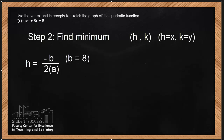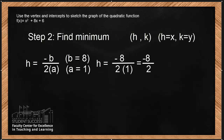Let's substitute: negative 8 divided by 2 times a. Remember we found a in step number 1 — it's a 1. Now we're going to simplify. Negative 8 divided by 2 times 1, which is 2. Simplify further: negative 8 divided by 2 is negative 4. We were looking for a point on the graph, h and k, and we found h to be negative 4.